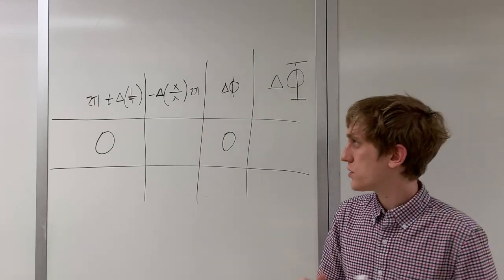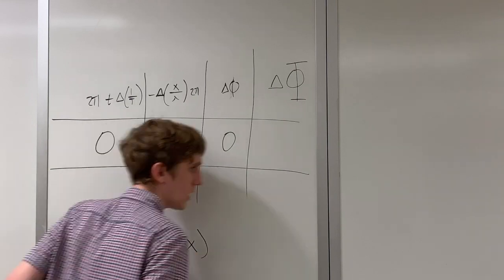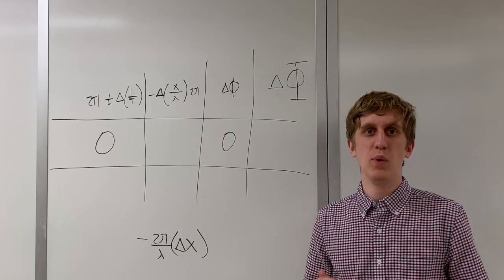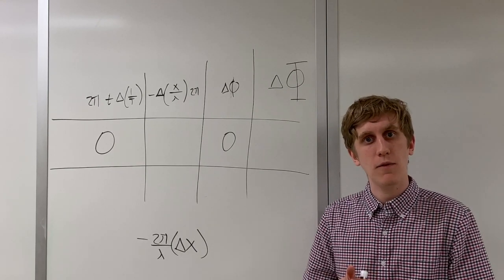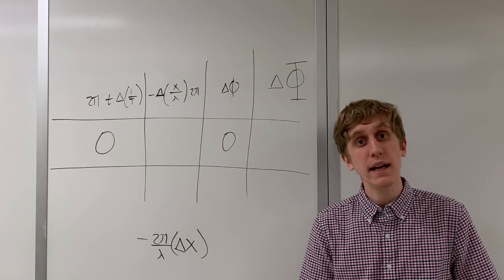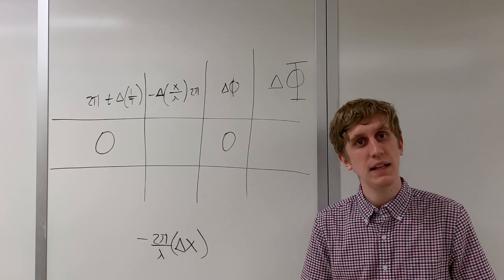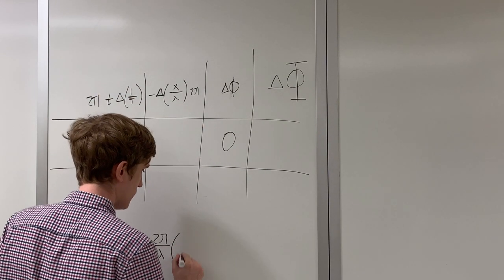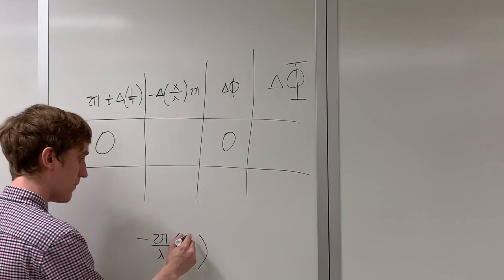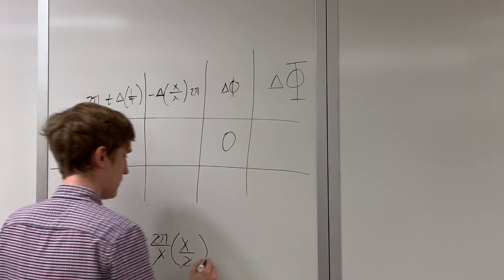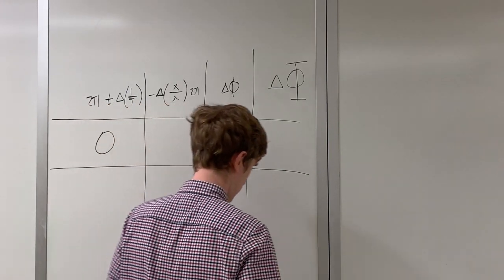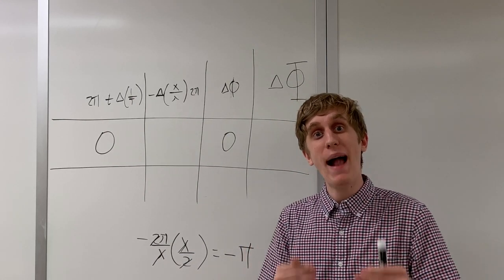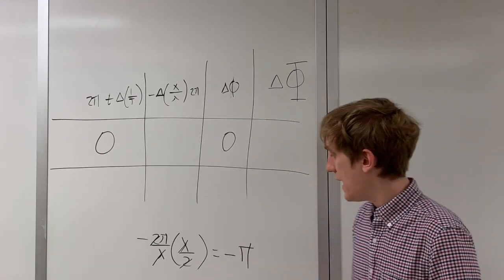So the only thing we need to consider here is the difference in x. Writing that out, that looks like this. So we just need to know this number, delta x. We specified what delta x was though. It was one half of a wavelength. So let's plug that in right here. The difference in path length is half of a wavelength. So the difference in the phase of the waves due to the path length difference that the waves traveled is negative pi.